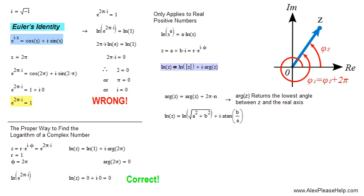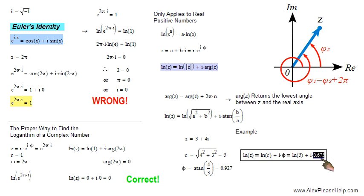Say z equals 3 plus 4i. r equals 4 squared plus 3 squared square root equals 5. phi equals the arctangent of 4 over 3, that's 0.927 radians. So, then, the logarithm of z, logarithm of r, plus i phi, natural logarithm of 5, times 0.927. Simplifying, we get 1.609 plus 0.927i. That's just an example.